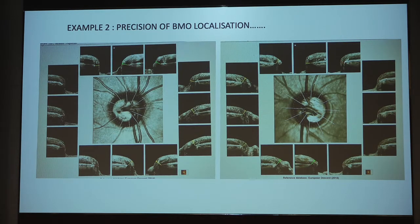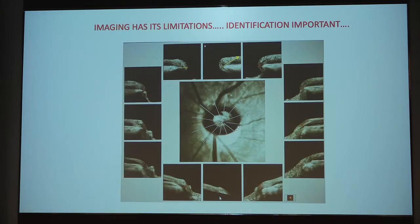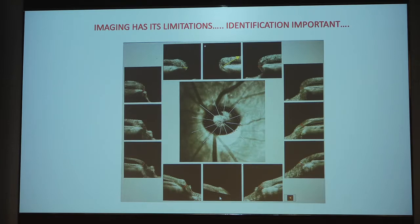In this image, you have precise BMO localization in every sector of the 12 — you can see the BMO and its ending clearly, and all sectors are classified based on normality using red, green, and yellow color coding. Very simple, very easy, but mandatory. Knowing the imaging has its own limitations and identifying them is important. If you see an image where the segmentation has gone wrong, irrespective of how good your device is, optical devices have their own limitations and you must be absolutely sure of what you are looking at.